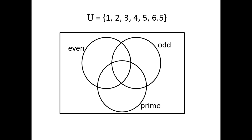So let's start with the number 1. Since 1 is not even, it cannot be within the circle for even. 1 is odd, so it has to be inside the circle that says odd. And here's the trick question: is 1 a prime number? Well, 1 is not considered to be a prime number. So 1 has to be outside of the even circle, outside of the prime circle, and inside the odd circle.